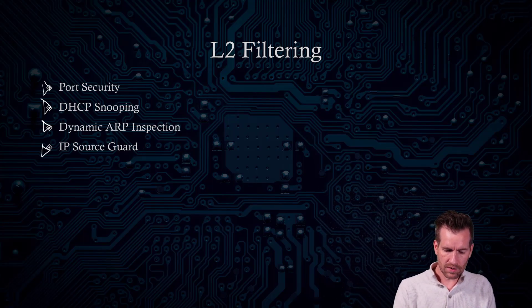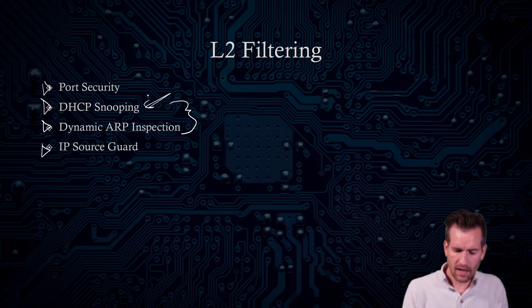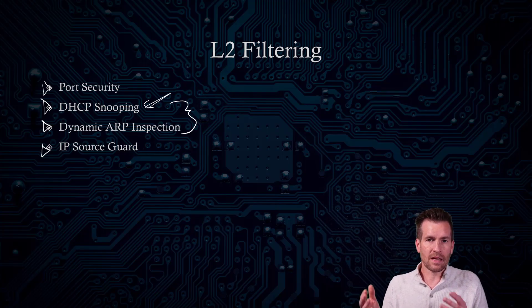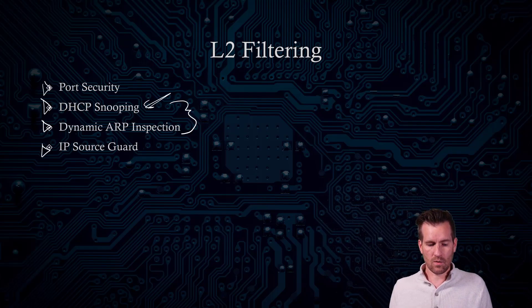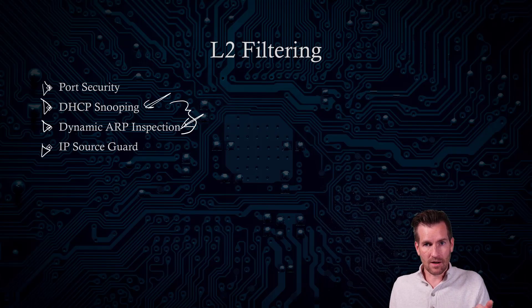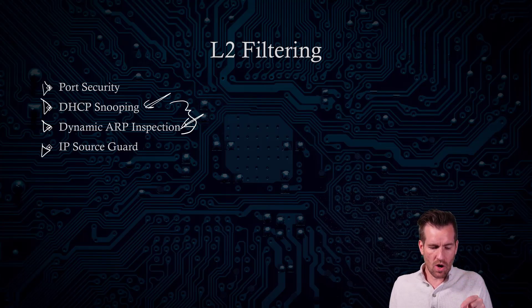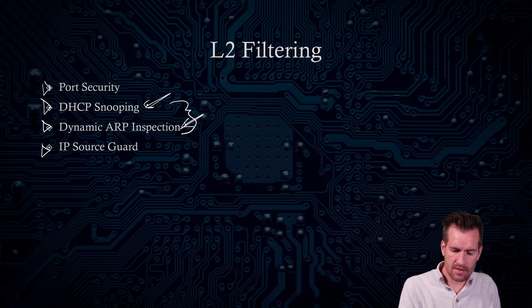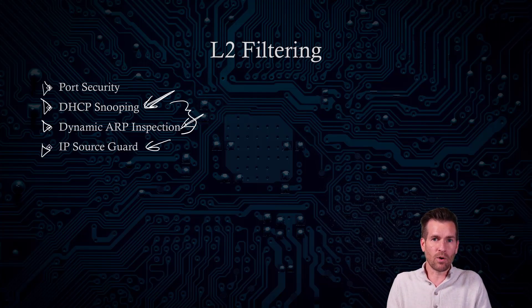It uses the same process that both DHCP snooping and ARP inspection use. When we set up DHCP snooping on our network, it creates the DHCP snooping binding database — a database of MAC addresses, IP addresses, and ports that are associated with those. Dynamic ARP inspection looks at the ARP frames going across those switches and compares them to that DHCP snooping binding database. The same thing happens with IP Source Guard: it's taking a look at that binding database and seeing if traffic coming in from that port has an IP address and MAC address that makes sense.